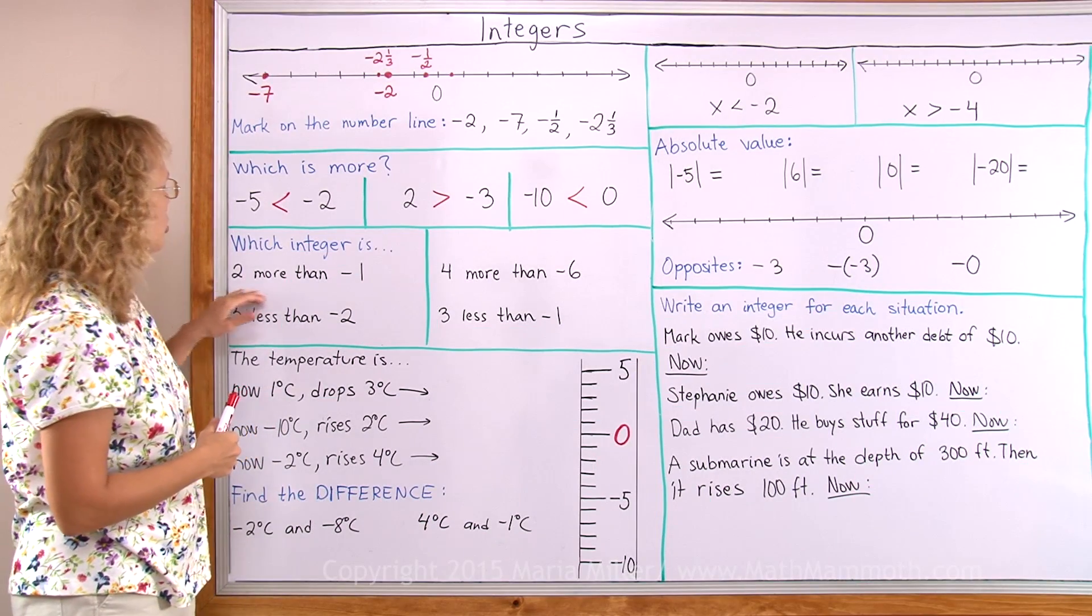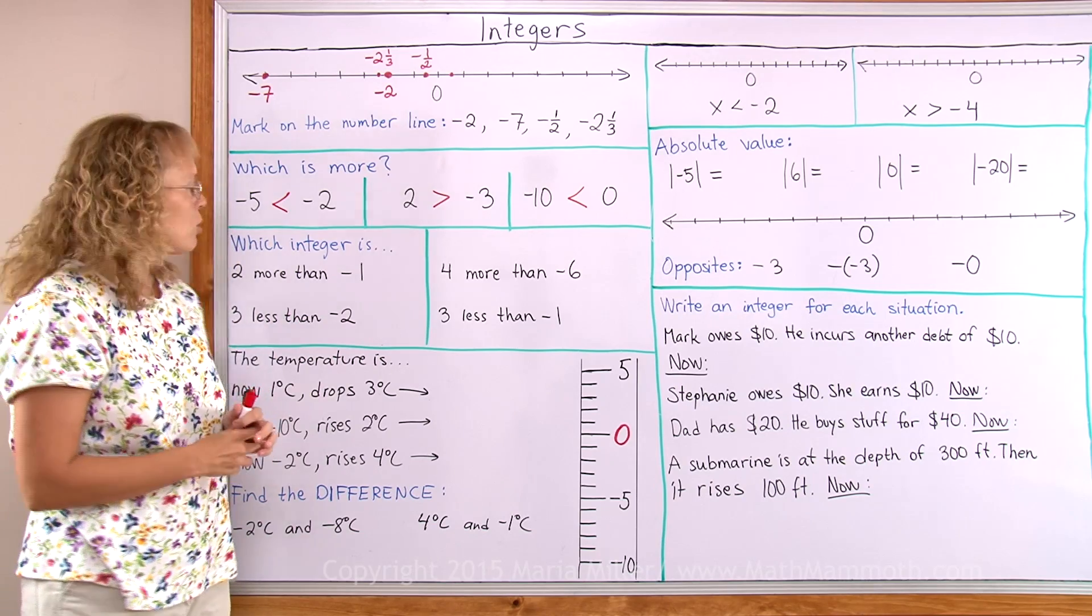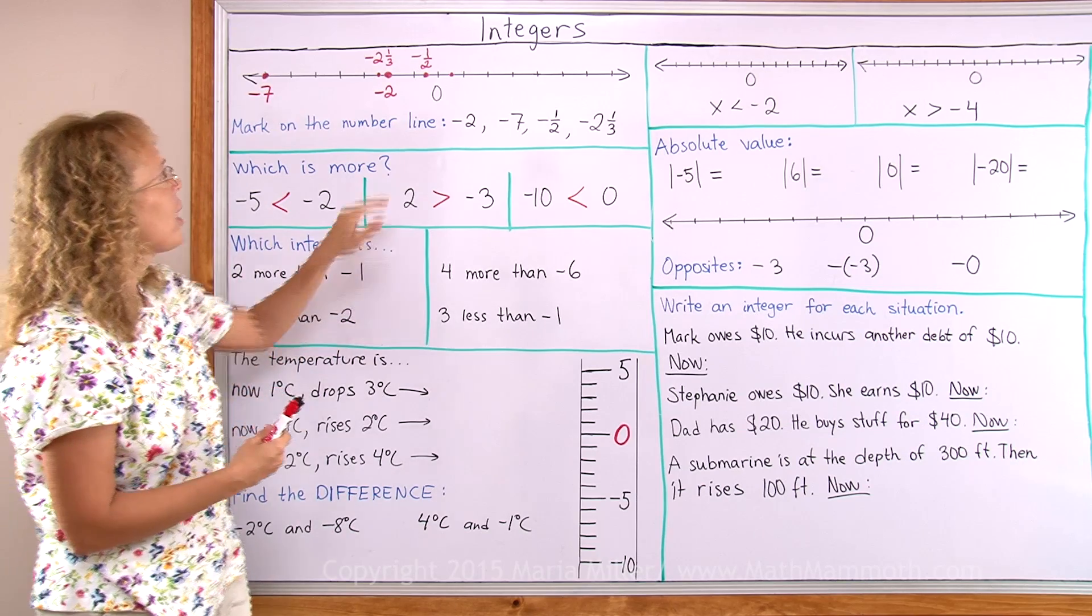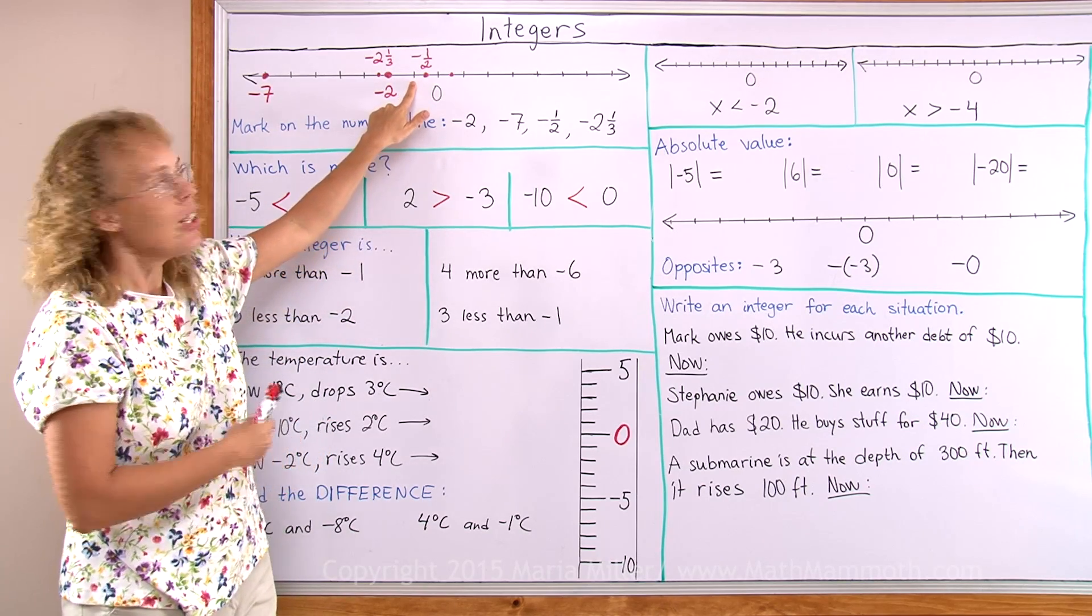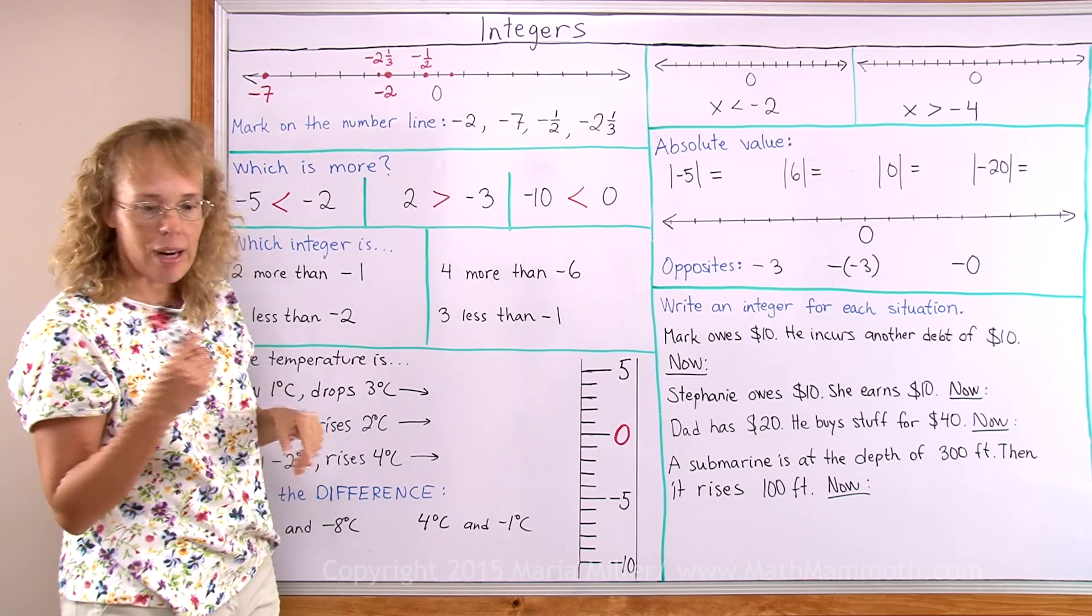Which integer is 2 more than negative 1? We can use the number line to solve these. If I check first where negative 1 is and then I go 2 more. Negative 1 right there. Go 2 more that way. And that is 1.